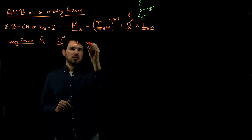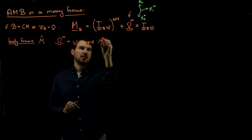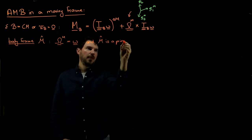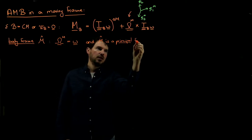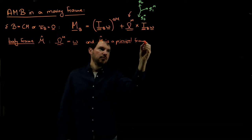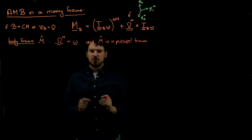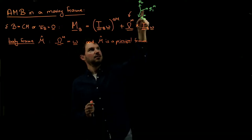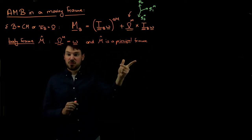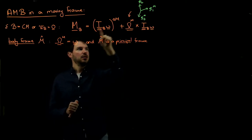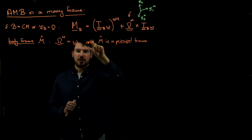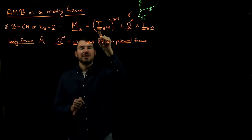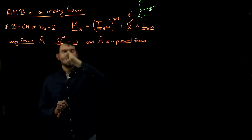The second condition — and this is important — is that M-hat is a principal frame. Remember, every frame had a particular moment of inertia tensor that looked different in all kinds of frames. But if we are in a principal frame, meaning our axes align with the principal symmetry axes of the body, then our I_B moment of inertia tensor became diagonal. That's what we want to explore here.